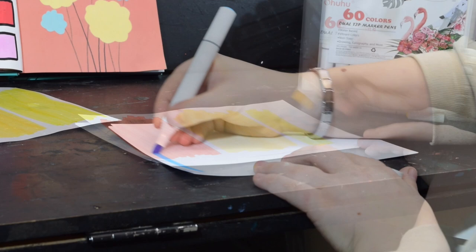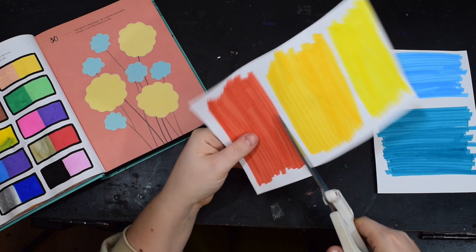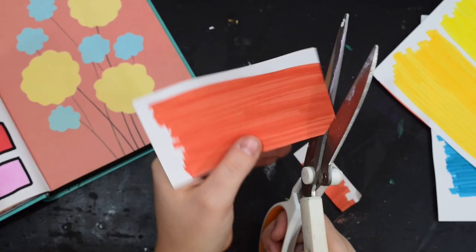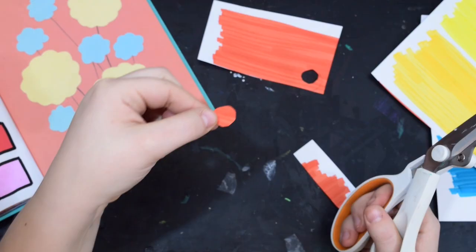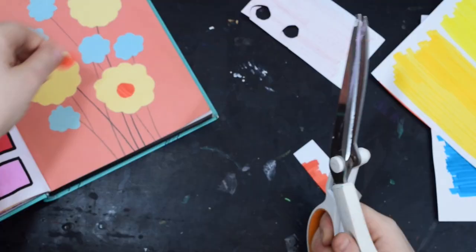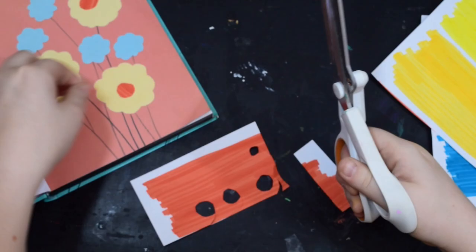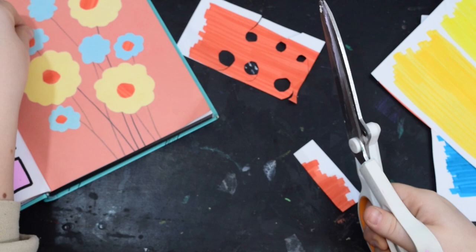So you'll see that I match the colors with the flowers to make it look nice. Let the yellows go with the yellows and the blues go with the blues and then we've got this nice orange dot for the middle of the flowers.